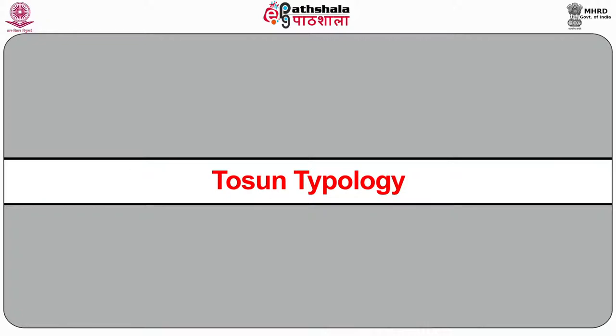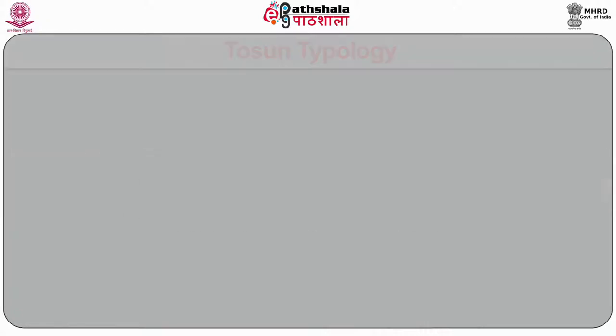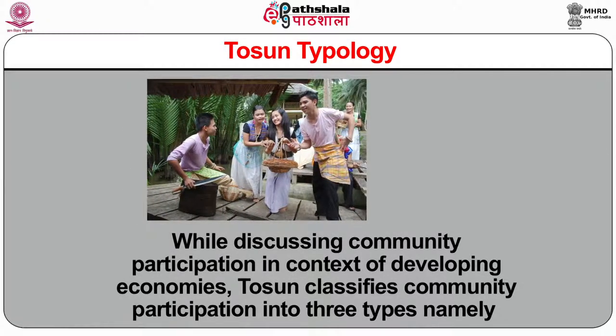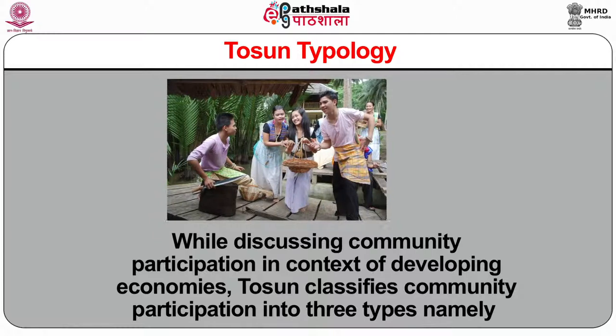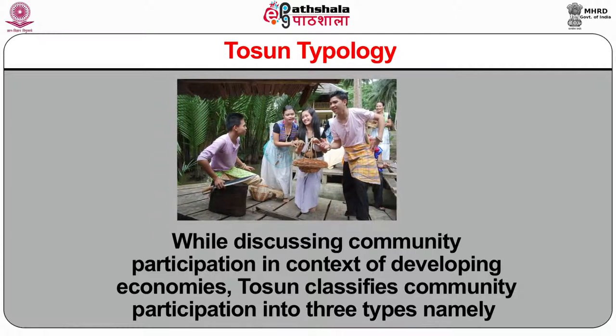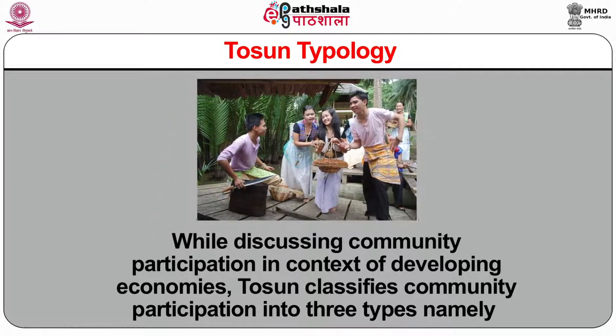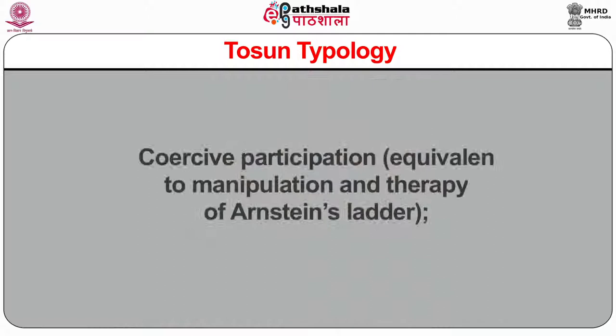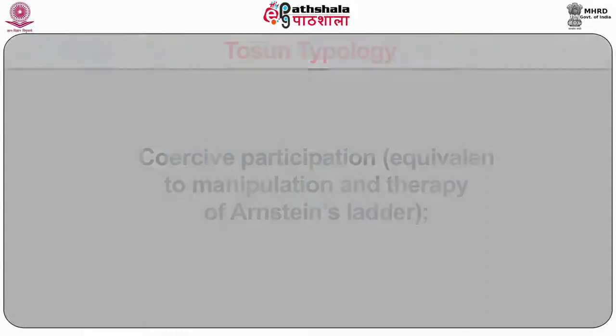Then the next one is the Tawson typology. While discussing community participation in the context of developing economies, Tawson classifies community participation into three types: coercive participation, which is equivalent to manipulation and therapy of Arnstein's ladder; and induced participation, which means equivalent to informing, consultation and placation of Arnstein's ladder.